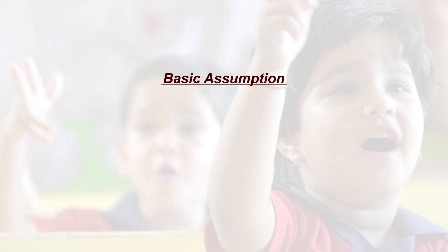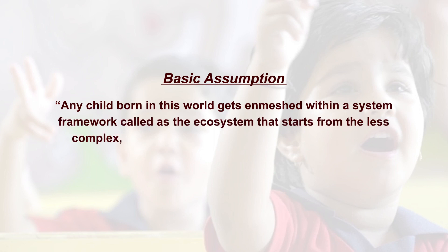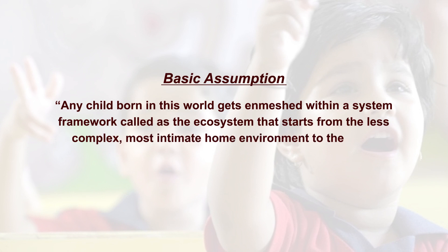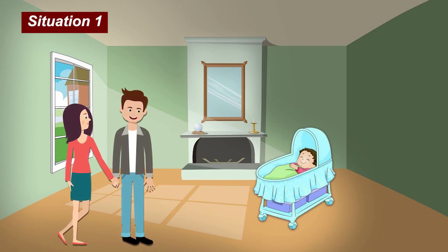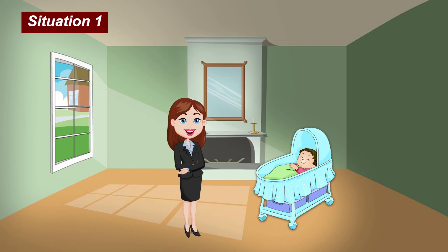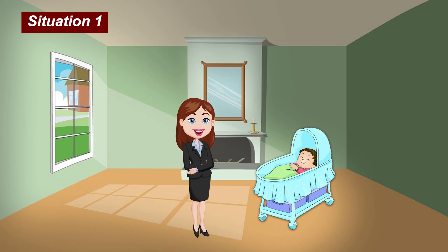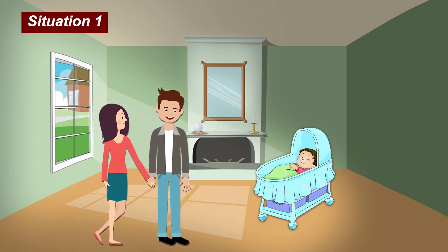The basic assumption of this theory is that any child born in this world gets enmeshed within a system framework called the ecosystem, starting from the least complex, most intimate home environment to the more complex, broadest, far-off system called society or culture. Consider the following situation: a child named Robin is born to a stable middle-class, happily married, employed couple and was taken care of by a patient caretaker from six months during the daytime. Every evening and all weekends, Robin's parents spent quality time with their son.